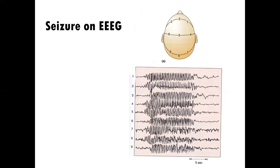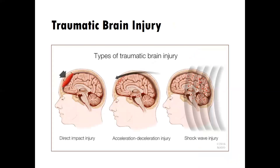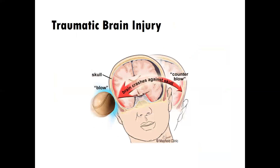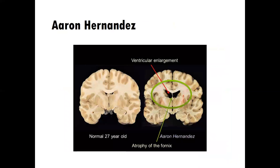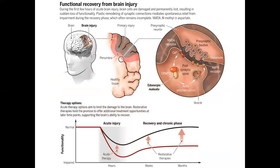Then we'll learn about seizures and trying to understand seizures through the lens of EEG. And we'll learn about traumatic brain injury — different types of traumatic brain injury, the progression of traumatic brain injury, the Aaron Hernandez case and what that tells us about traumatic brain injury. And we'll conclude by learning about functional recovery to a certain degree from brain injury and what tends to be a good predictor of recovery. That'll round out our very full class session on the neuroscience of mental disorders.